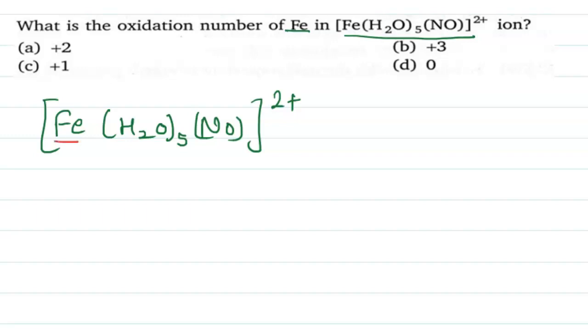So first of all, let the oxidation number of iron be X. Water H₂O is a neutral compound.